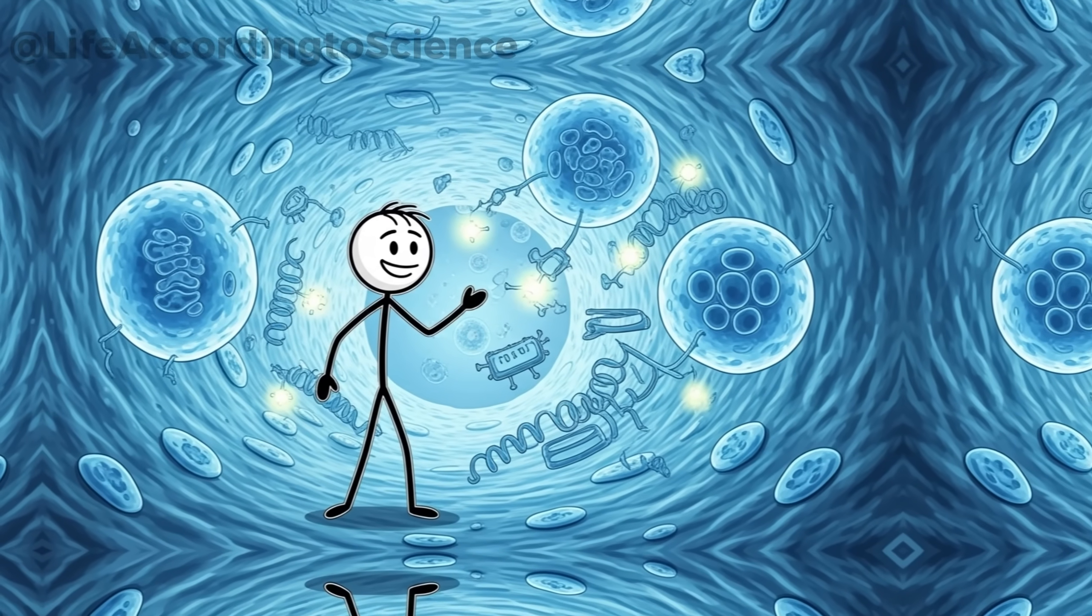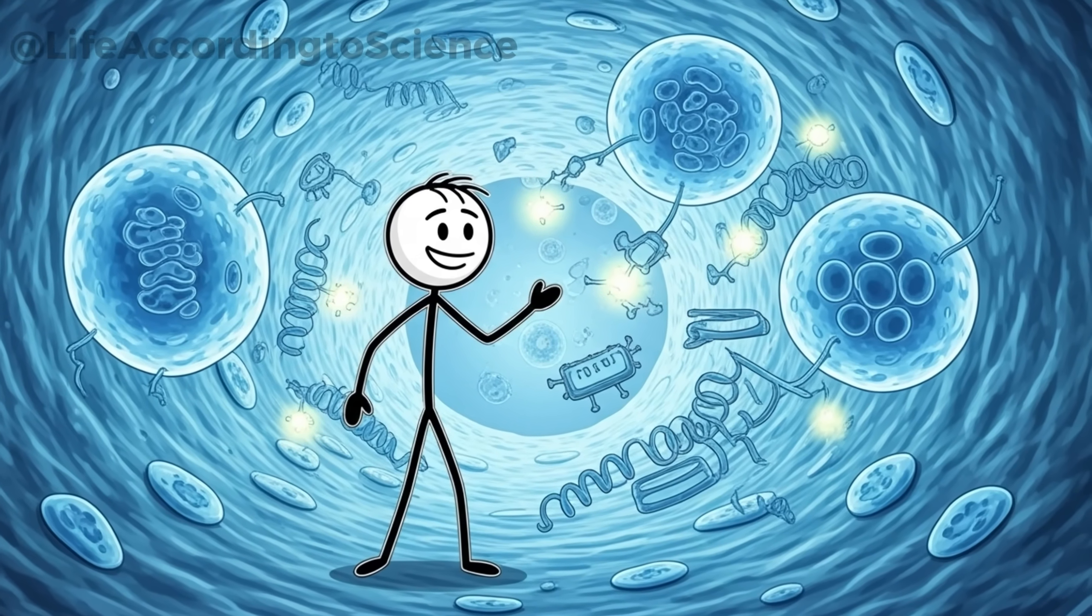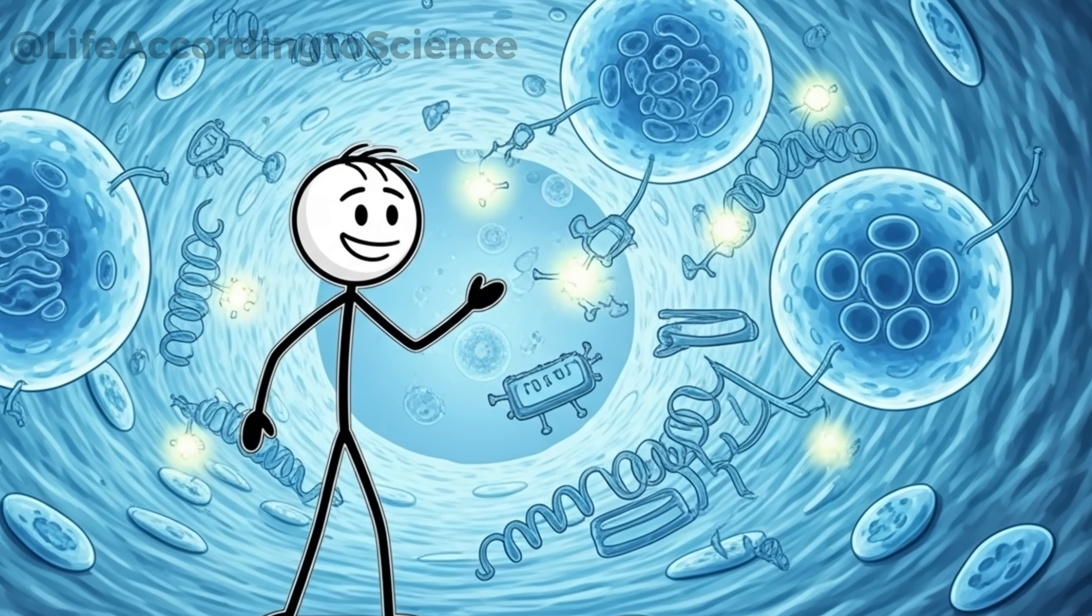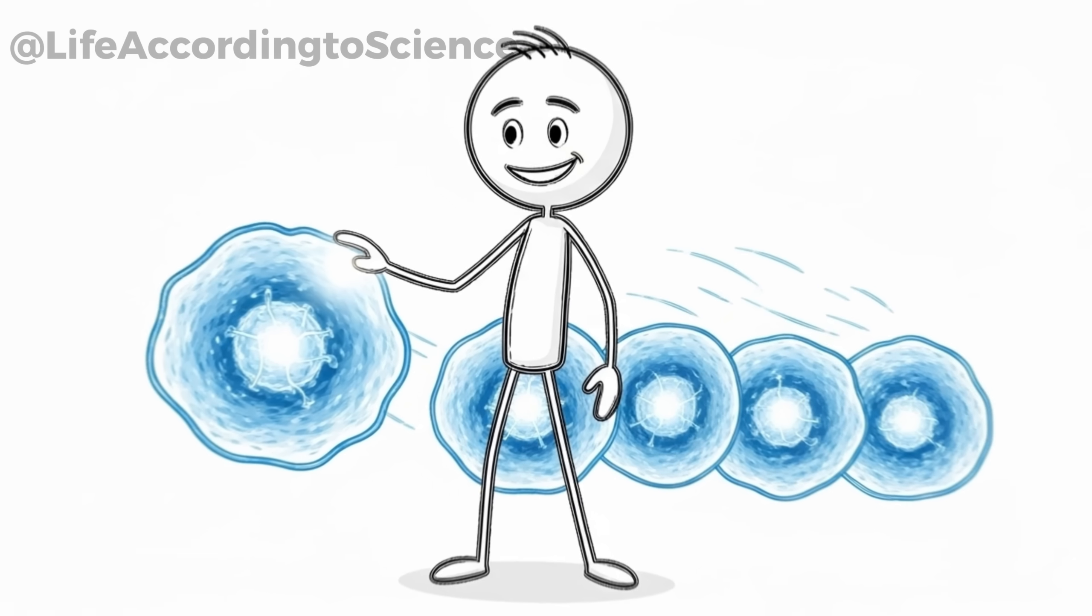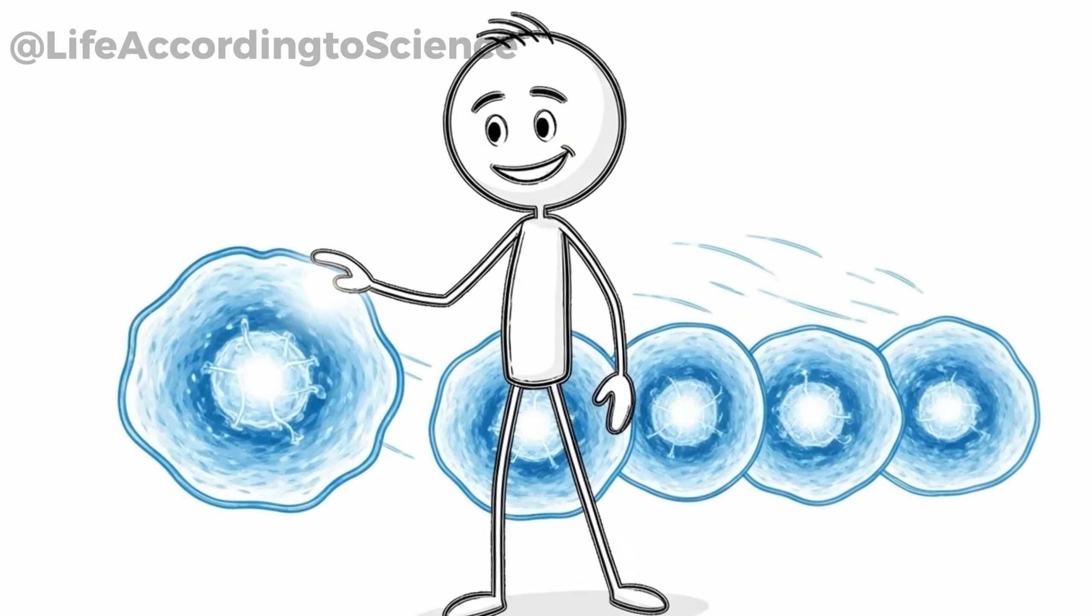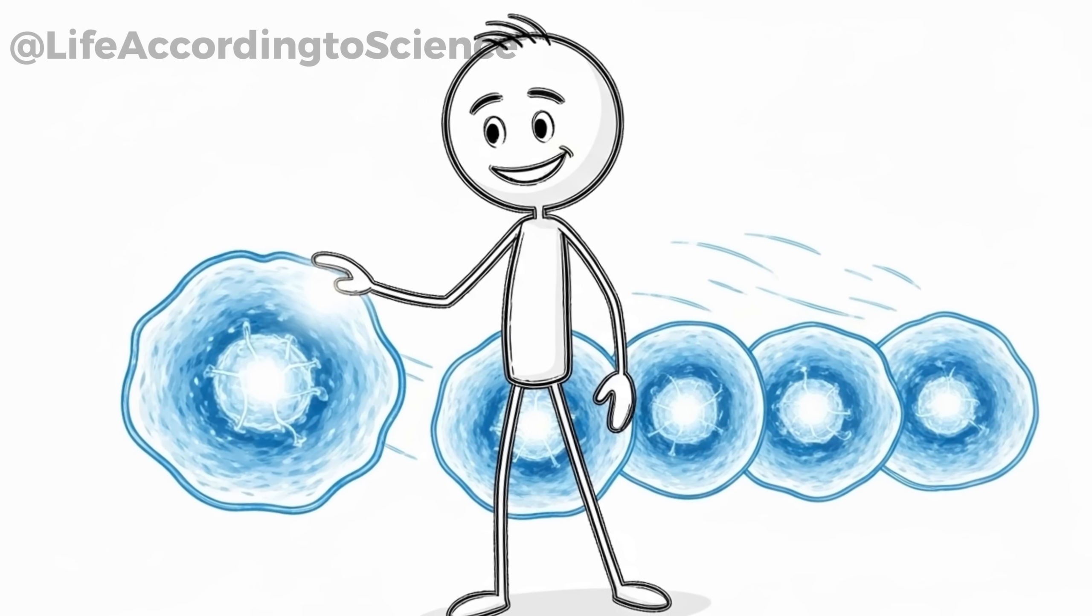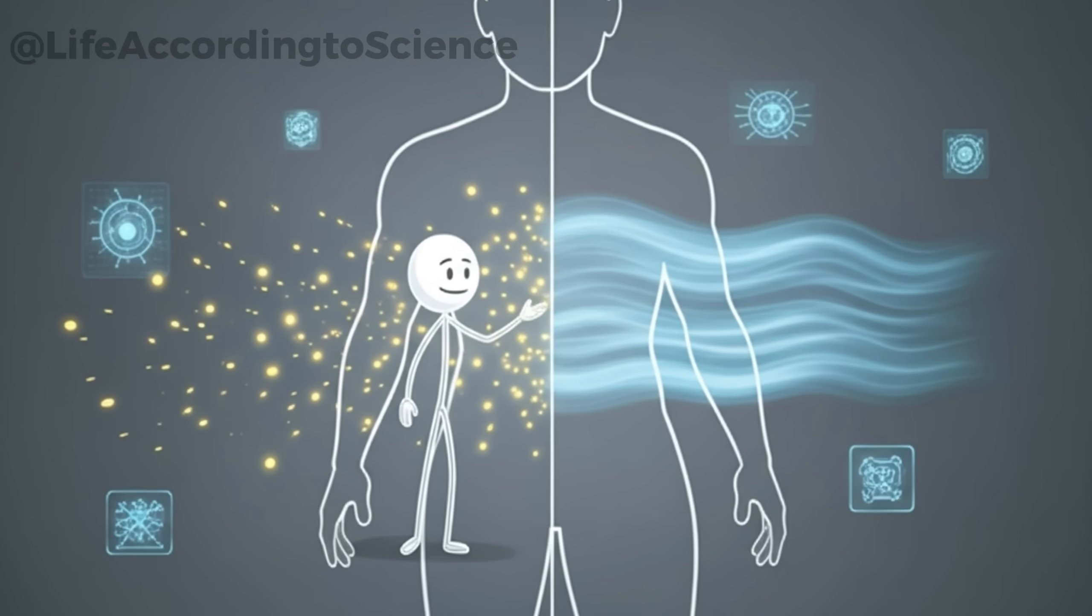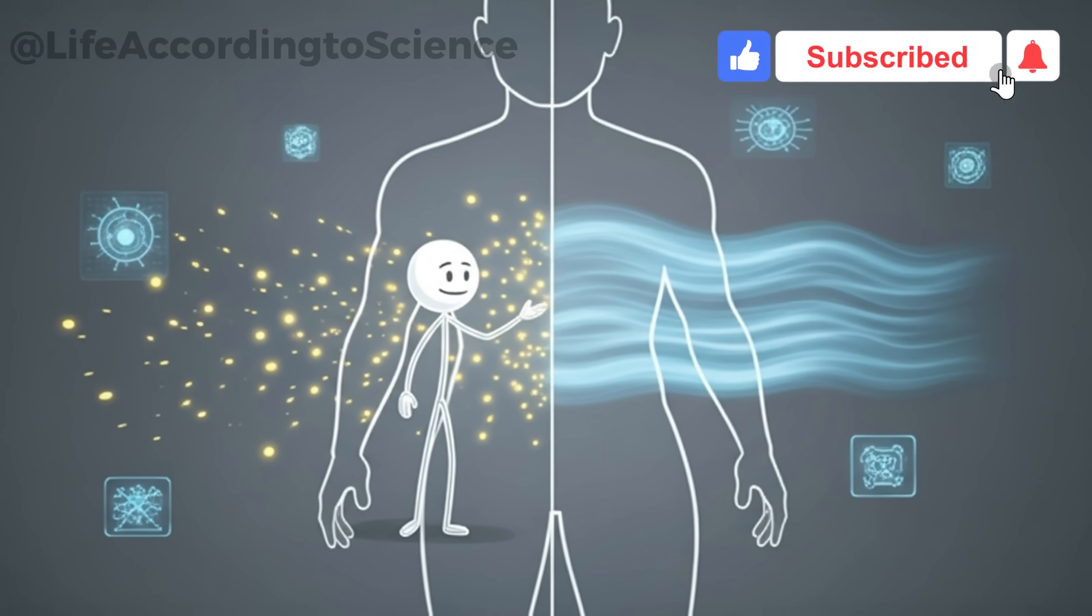This is also the phase when autophagy, the self-cleaning mechanism of cells, starts to stir. Damaged proteins and malfunctioning organelles are tagged and recycled. It's like spring cleaning at the microscopic level, preparing your cells to function more efficiently once normal eating resumes. Think of it this way: fasting forces your body to stop consuming and start repairing. It's a moment of biological reset that modern diets rarely allow.